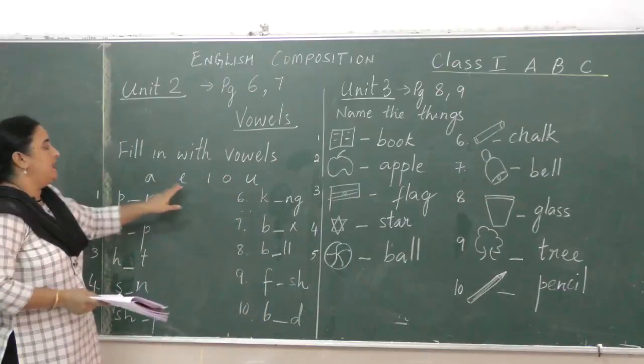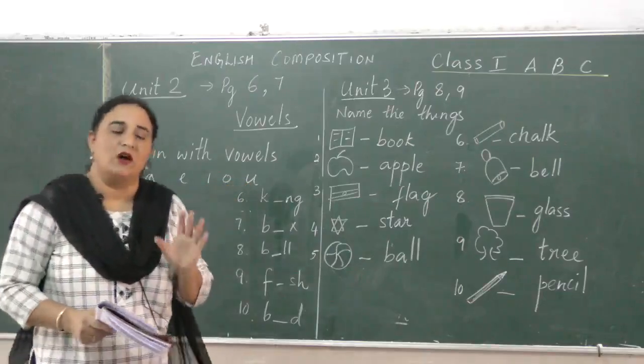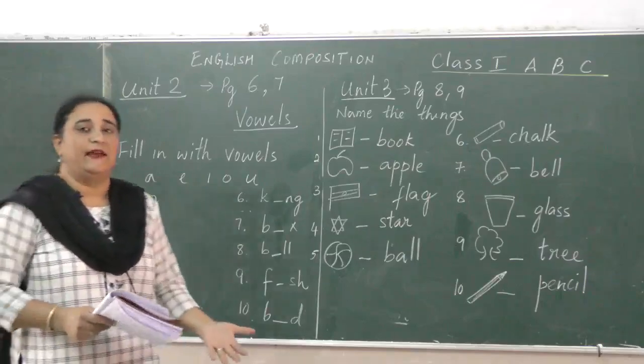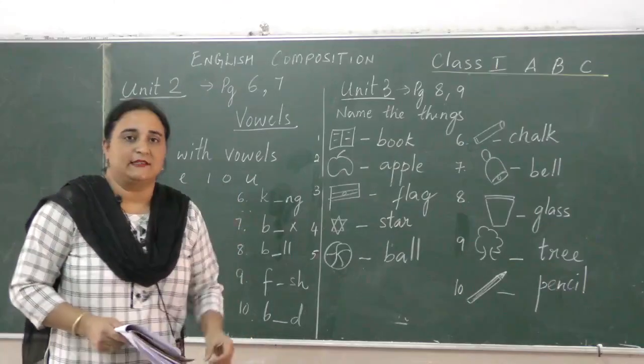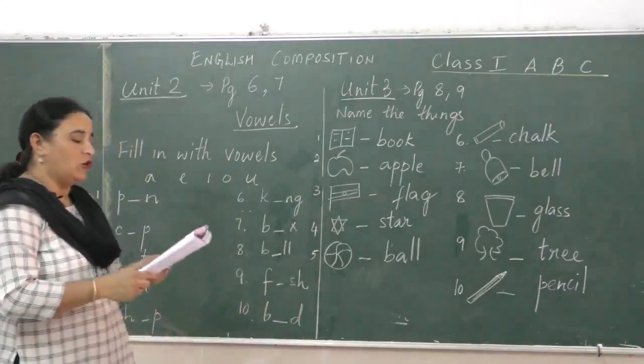Now these alphabets A, E, I, O, U are known as vowels. The other 21 alphabets that are there, they are called consonants.